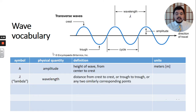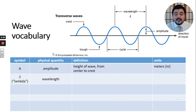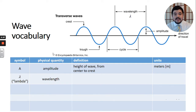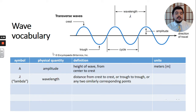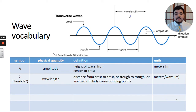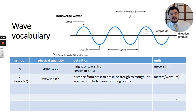Our next quantity is wavelength. We use the Greek letter lambda to represent the wavelength, and it is the distance from crest to crest, from trough to trough, or any two similarly corresponding points. The distance for wavelength is in meters per wave, which we often just call meters because wave isn't a unit of measure.